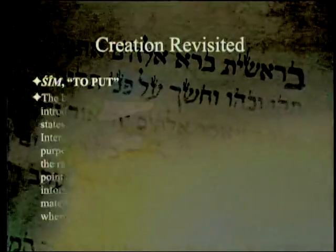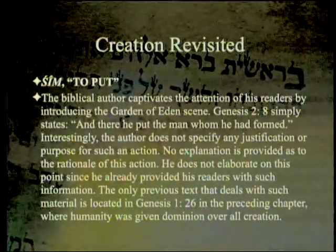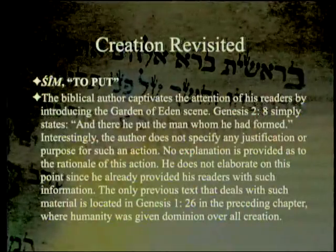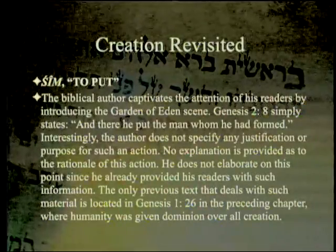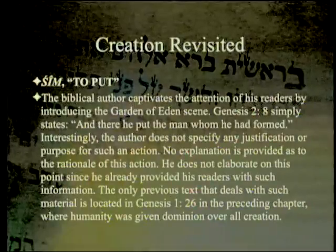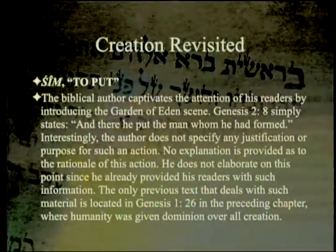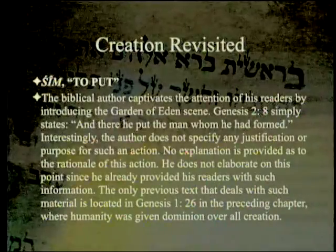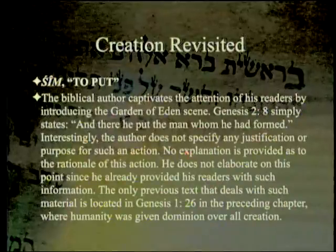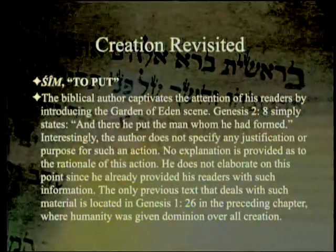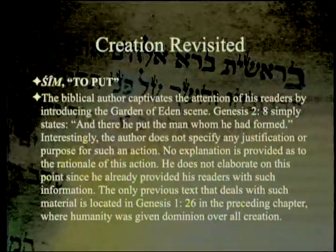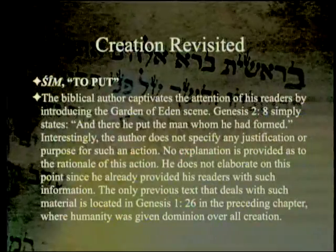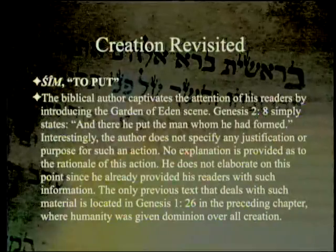The next term is 'sim,' meaning to put or place. The biblical author introduces the Garden of Eden scene: Genesis 2:8 simply states 'and there he put — sim — the man whom he had formed.' Interestingly, the author does not specify any justification or purpose for such an action, since he already provided his readers with such information. The only previous text dealing with such material is Genesis 1:26, where humanity was given dominion — 'radah' — over all creation.